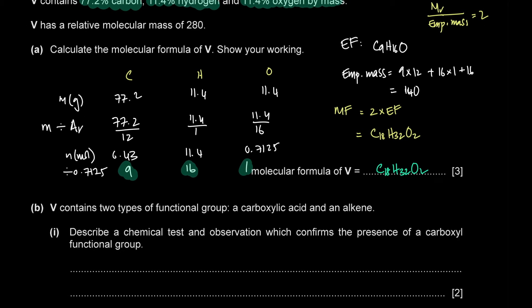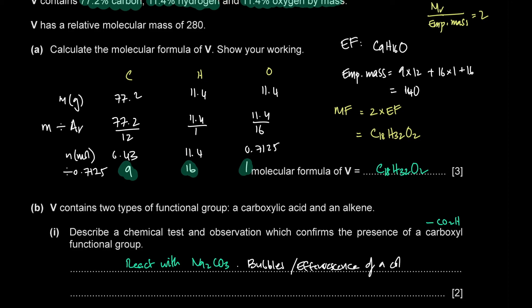V contains a carboxylic acid and an alkene. To confirm the carboxyl group, react with sodium carbonate (Na2CO3): effervescence of a colourless gas (carbon dioxide) will be observed.